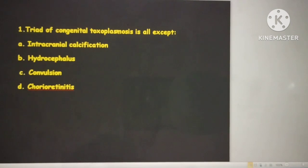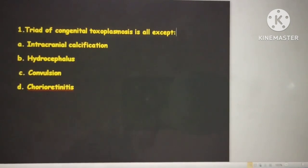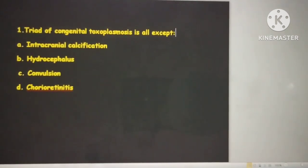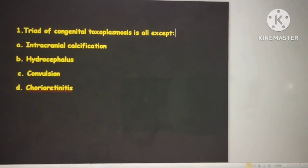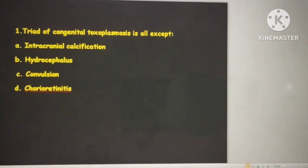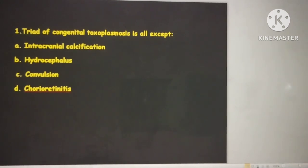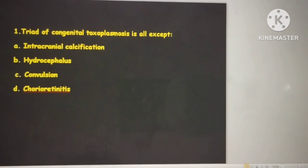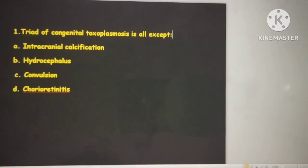The answer is convulsion. Always remember the triad for congenital toxoplasmosis is intracranial calcification, hydrocephalus, and chorioretinitis. In the previous session we discussed that a pregnant lady came with cervical lymphadenopathy, and because of that the baby developed intracranial calcification.